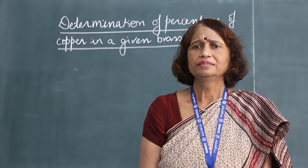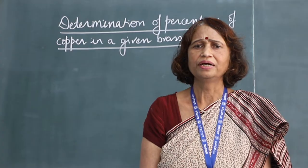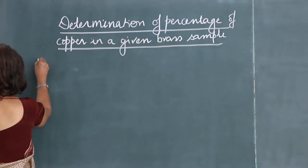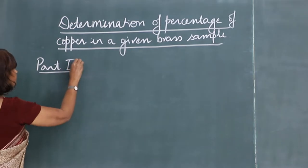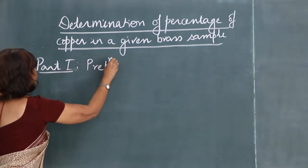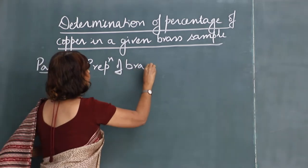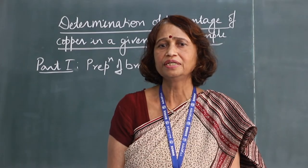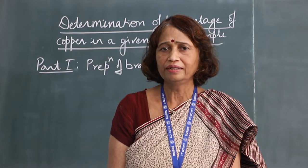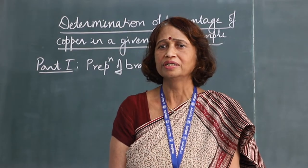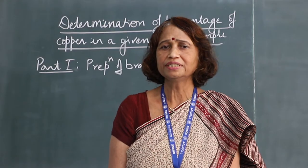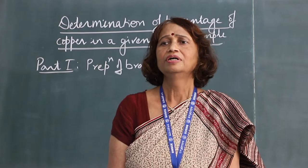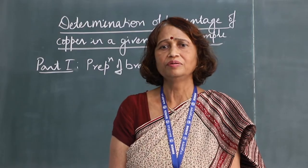The experiment is divided into two parts. The first part is preparation of brass solution. Determination of percentage of copper in brass samples can be carried out by iodometry, colorimetry, or spectrophotometric method. In today's experiment I am going to demonstrate the iodometric method for estimation of percentage of copper in the given brass sample.